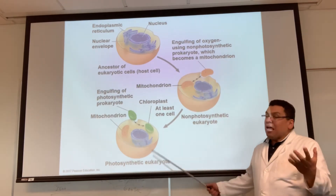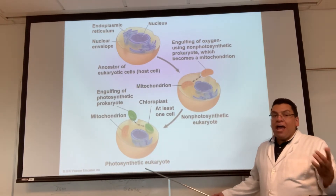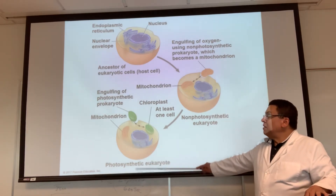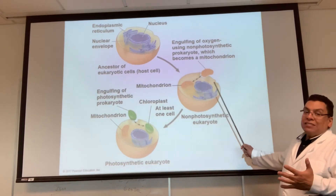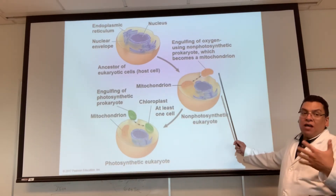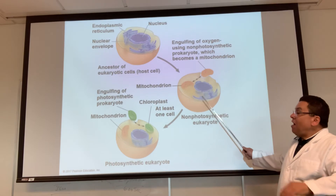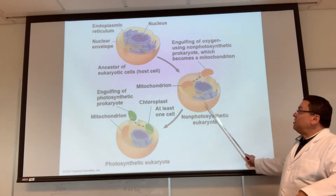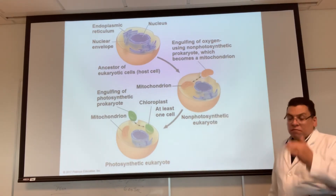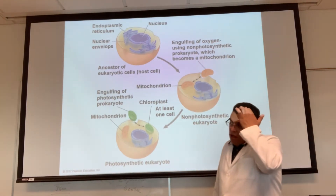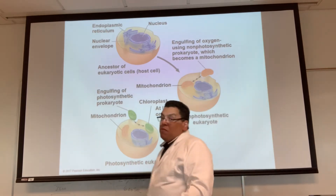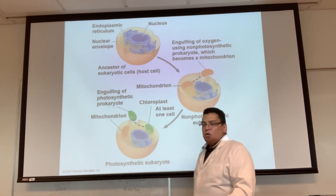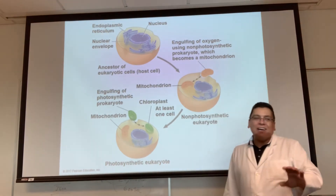So all plant life and algae came from the cell that engulfed the photosynthetic bacterium, and all animal cells and non-photosynthetic organisms came from the one that engulfed the energy-making bacterium. Now, you may say — this is just a theory called endosymbiosis.